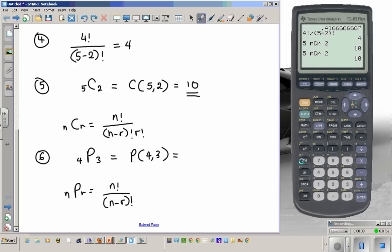You enter the first number: four, math, probability, item number two. Two calls up the nPr function, and then the second number which is three. Enter. Your final answer is 24.